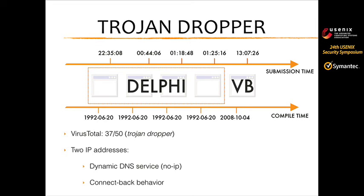More interestingly, there are two IP addresses involved: one for submission of the first Delphi executable and one for the Visual Basic one. Looking at the last executable's sandbox report, the sample uses a dynamic DNS service (no-IP), and the IP resolved by the DNS request is the same as the submitter's IP — a connection-back behavior. Looking at this in our whole dataset, we discovered almost 2,000 clusters share the same connection-back behavior, which is a clear indicator of development or testing.